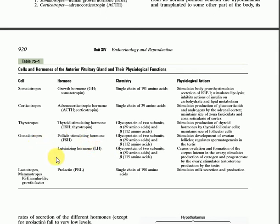The next cells are the gonadotrophs. These release follicle stimulating hormone (FSH) and luteinizing hormone (LH). Both are glycoproteins with two subunits, alpha and beta. Alpha subunits contain 89 amino acids in both. In the beta subunit, FSH contains 112 amino acids and LH contains 115 amino acids. FSH stimulates the development of ovarian follicles and regulates spermatogenesis in the testes. LH causes ovulation and formation of the corpus luteum in the ovaries, stimulates the production of estrogen and progesterone by the ovaries, and stimulates testosterone production by the testes.